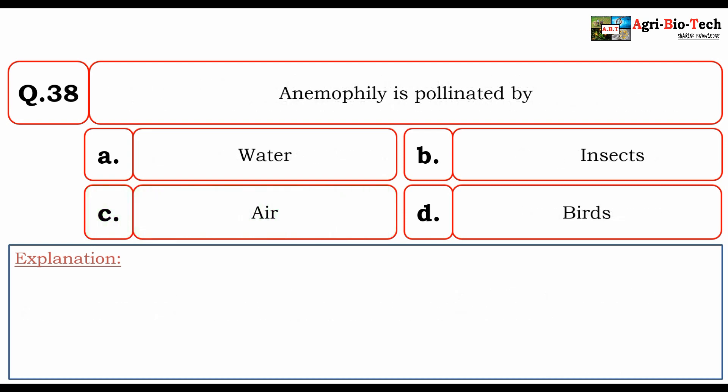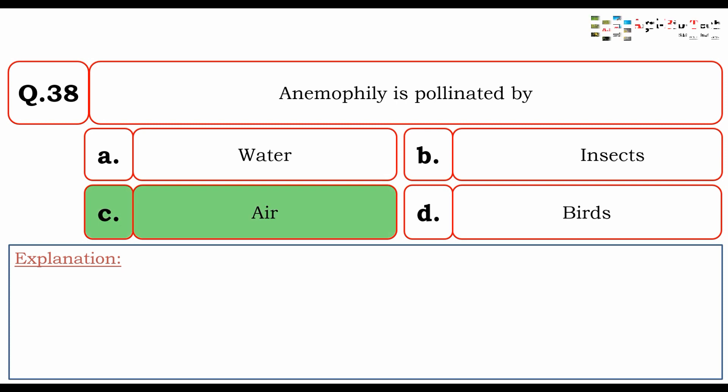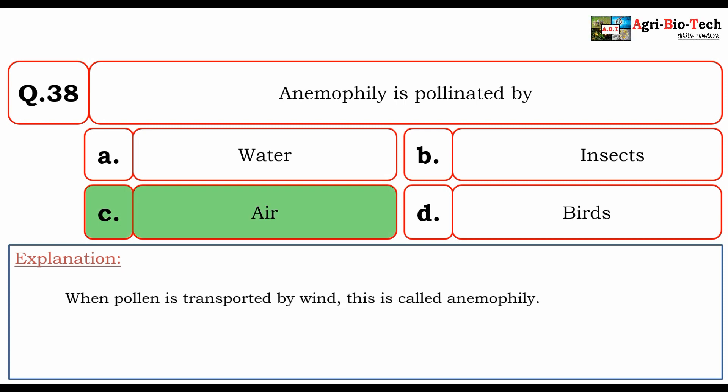Next question: anemophily is pollination by — A) water, B) insects, C) air, or D) birds. The correct option is C) air. When pollen is transported by wind, this is called anemophily.